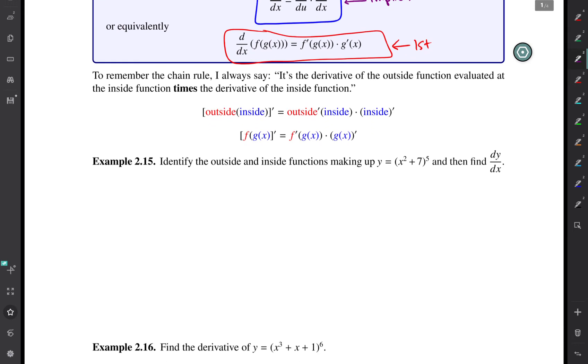So let's try to do an example. Example 2.15. So here we have y equals (x² + 7) raised to the fifth power, and we're asked to figure out what the outside and inside functions are. So I'm going to write the outside function in red. I'll go back and delete this and I'll say the outside function is the raising to the fifth power.